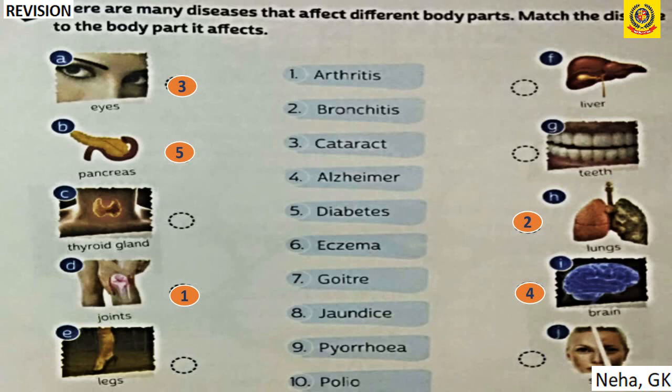Continuing the disease-matching: goiter occurs on the thyroid gland; jaundice affects the liver; pyorrhea affects the gums and teeth; polio affects the legs.